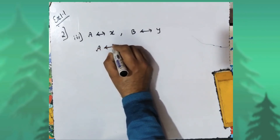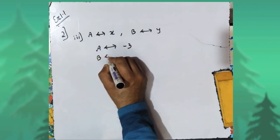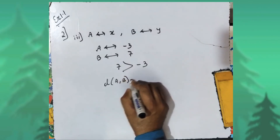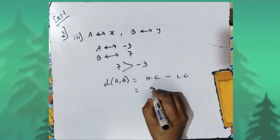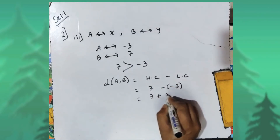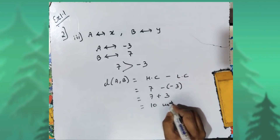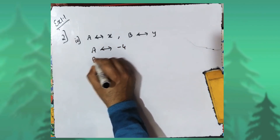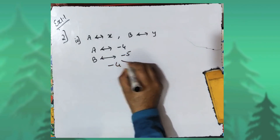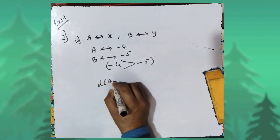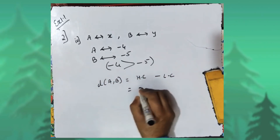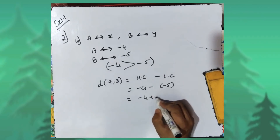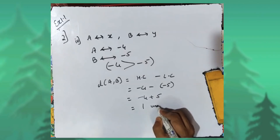In the third sub-part, coordinate of A is minus three and coordinate of B is seven. Seven is greater than minus three, so distance AB equals higher minus lower coordinate: seven minus minus three, which is seven plus three, equals ten units. In the fourth sub-part, coordinate of A is minus four and coordinate of B is minus five. Minus four is greater than minus five, so distance AB equals minus four minus minus five, which is minus four plus five, equals one unit.